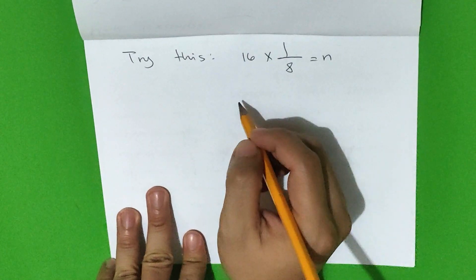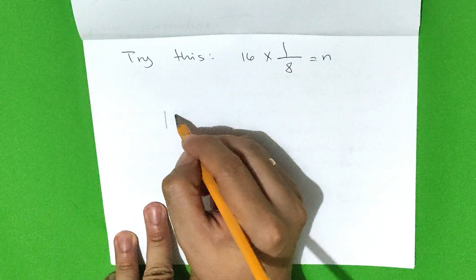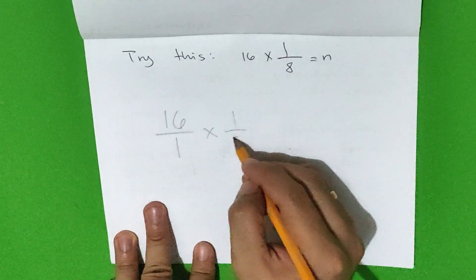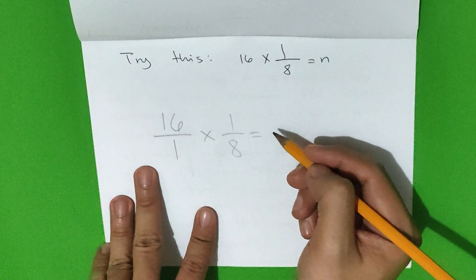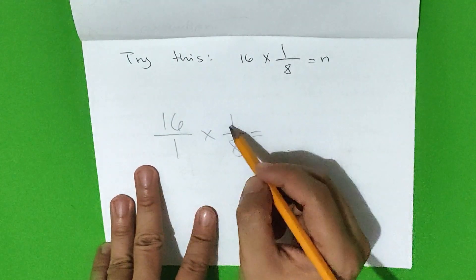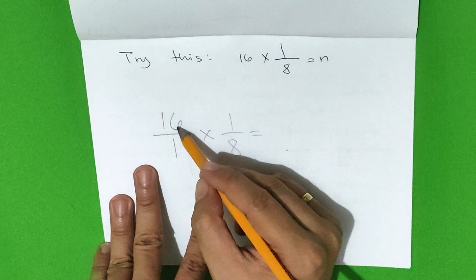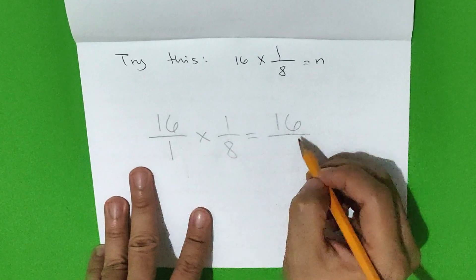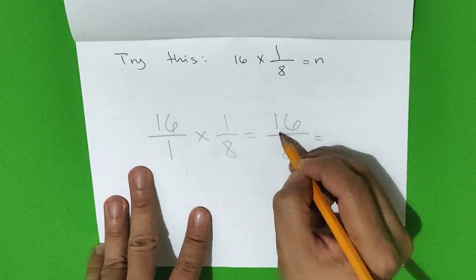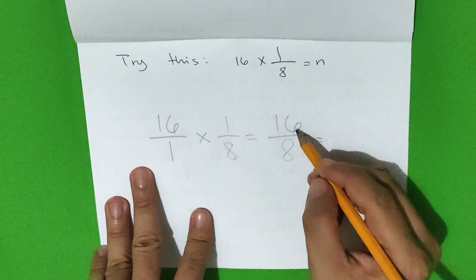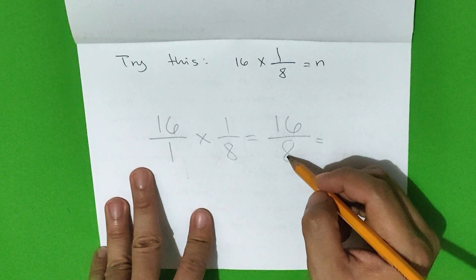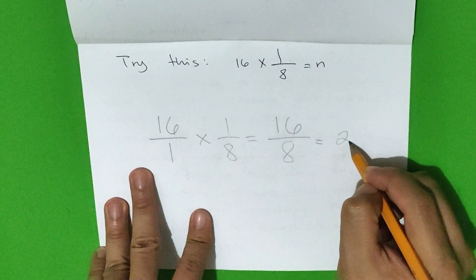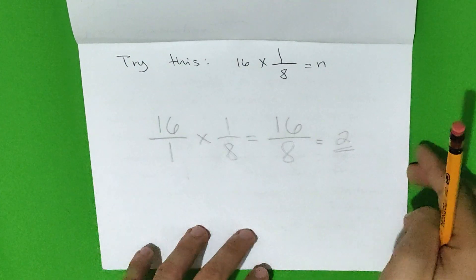Now let us multiply 16 and 1/8. The first step is to rename our whole number 16 with a denominator of 1, and multiply by 1/8. The second step is to multiply the numerators and the denominators. 16 times 1 is equal to 16, and 1 times 8 is equal to 8. Since our product can still be reduced to lowest terms, let us divide 16 by 8. 16 divided by 8 is 2. Correct — it's 2. So if your answer is 2, you got it right. Very good!